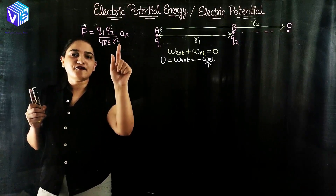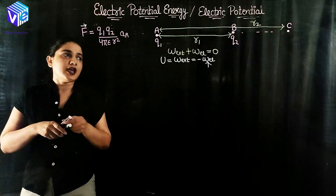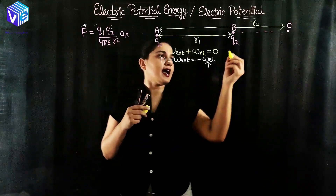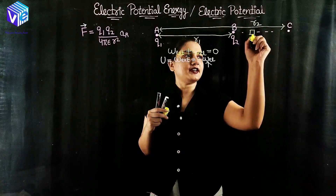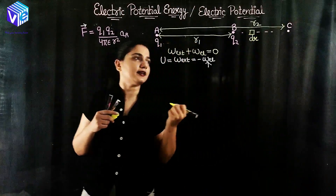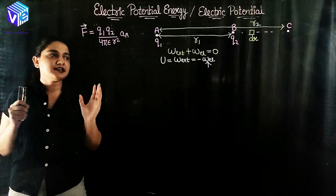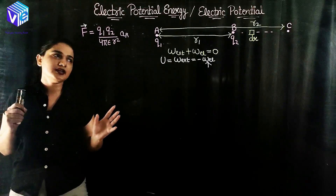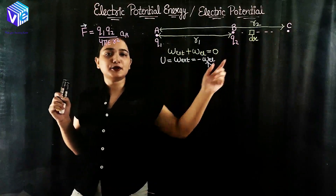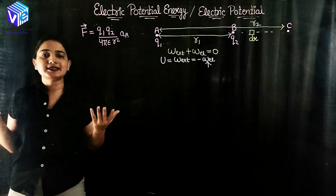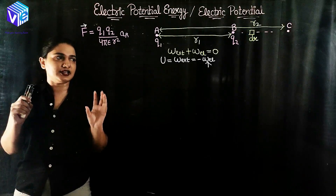Now I need to calculate the work done. Supposing here I have a small portion of the displacement dr, for this small displacement I can calculate the small work done dW. Then I will integrate it from R1 to R2, and I will get the external work done, which equals the electric potential energy.